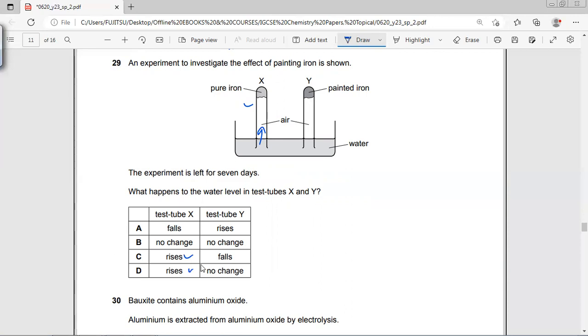So in test tube X, the water level rises, and painted iron is no change. Some might think, why doesn't it fall if it goes up? Why doesn't it go down here?